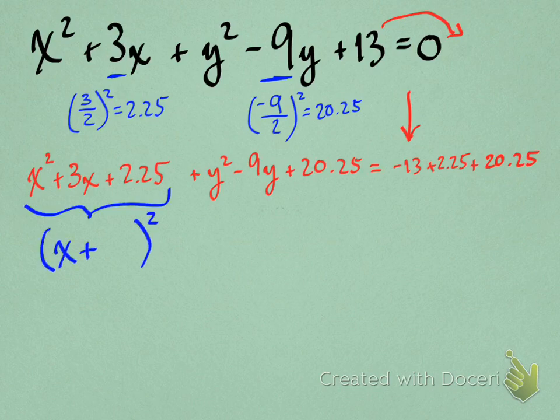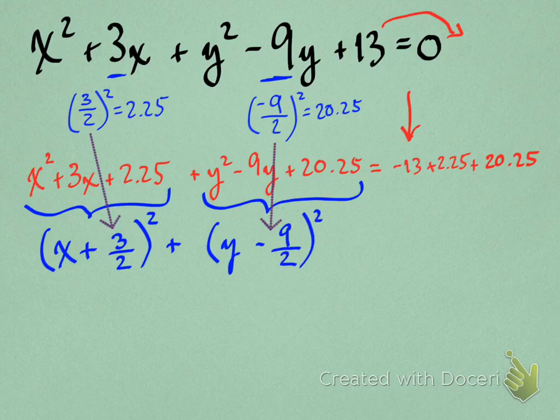So that first thing factors to x plus, and then remember, that number inside the binomial is just half of b, all right? So you don't have to worry about factoring hard-looking expressions like that. The other one gives us y minus 9 halves, and we simplify the right side down to 9.5.